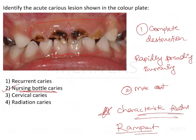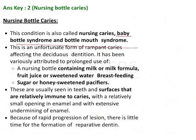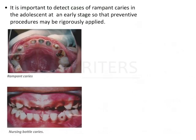The lower anteriors are spared because of the cleansing action of the tongue and the saliva from the submandibular glands. However, if this syndrome is not checked or prevented, it can spread to the posterior teeth and eventually include the lower anteriors as well. That is why once it begins, it needs to be monitored and treated immediately.